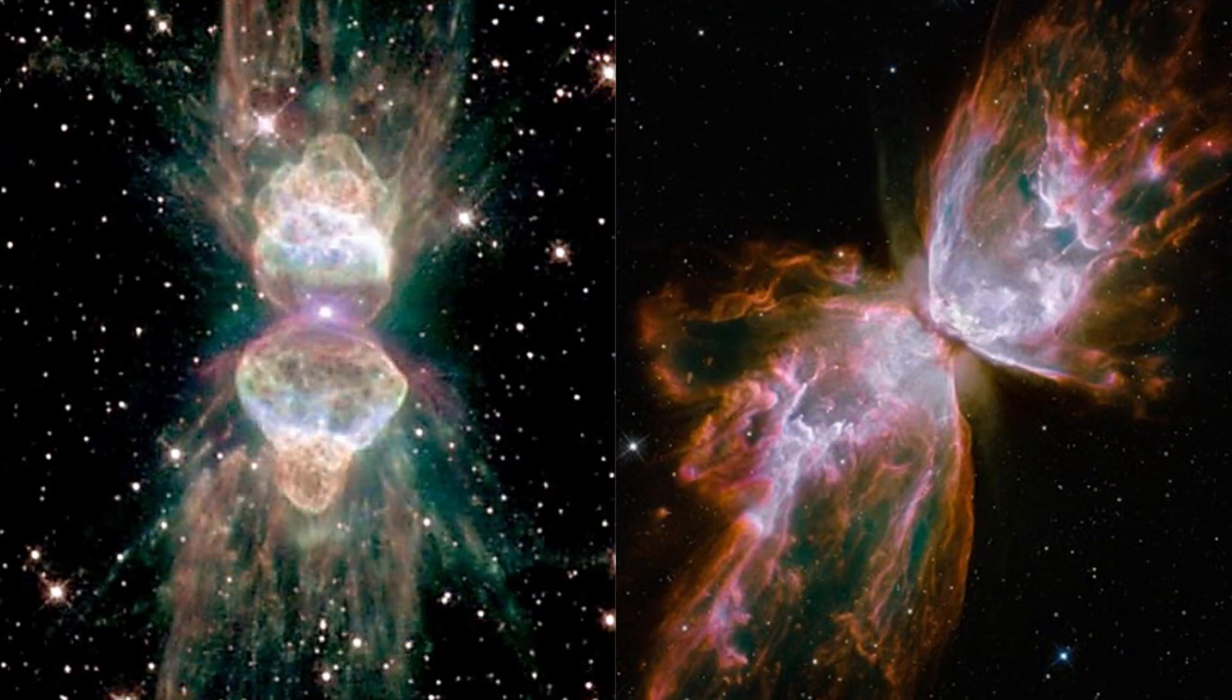Here are two examples from space of plasma filaments pinching in and concentrating the material into a plasmoid ball. The arc mode current then lights up the ball as a star. It does this without the problems of gravitational collapse. The image on the left is called the Ant Nebula, while the one on the right is the Butterfly Nebula.